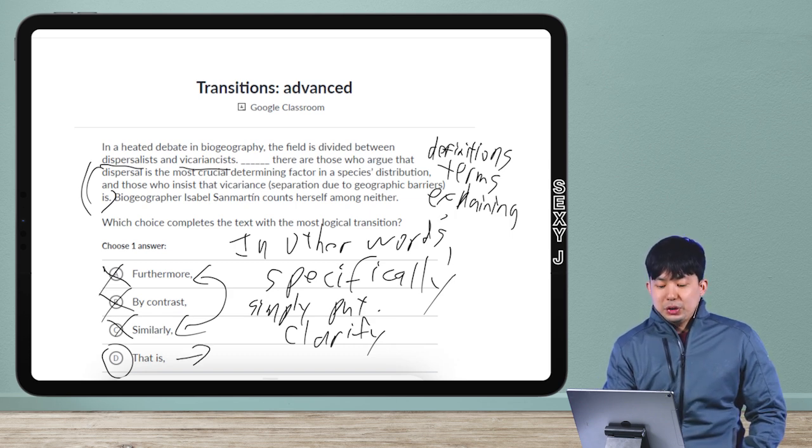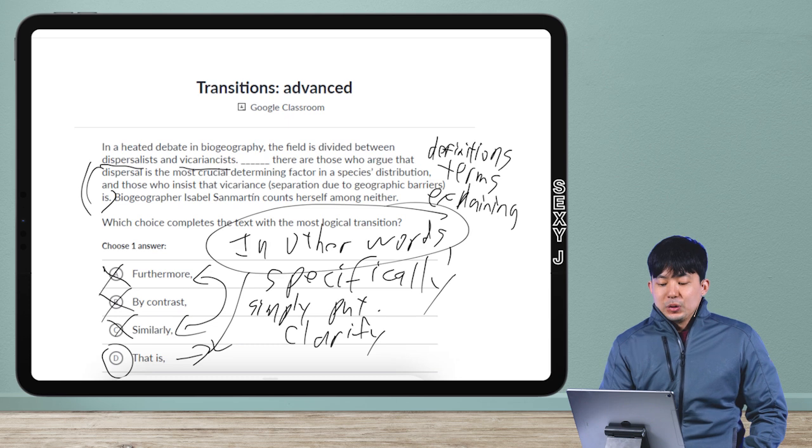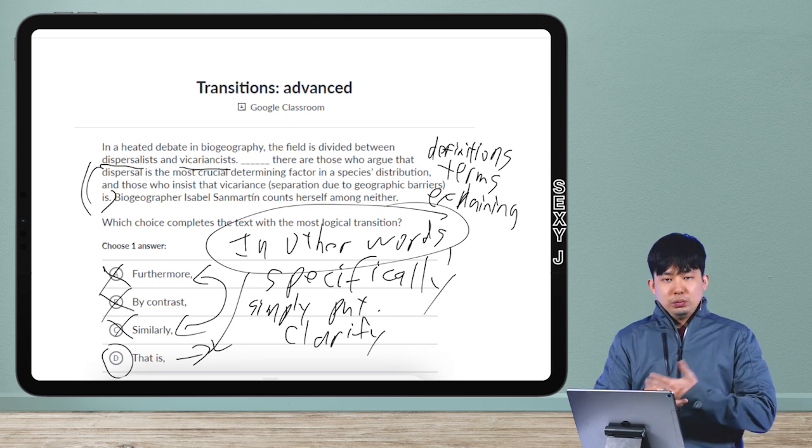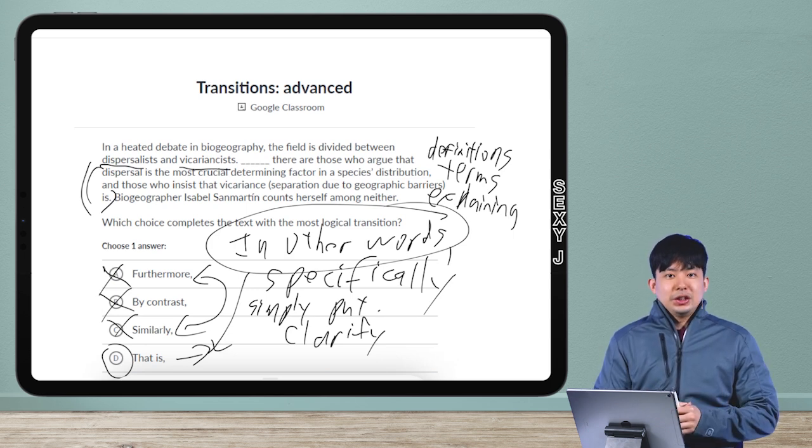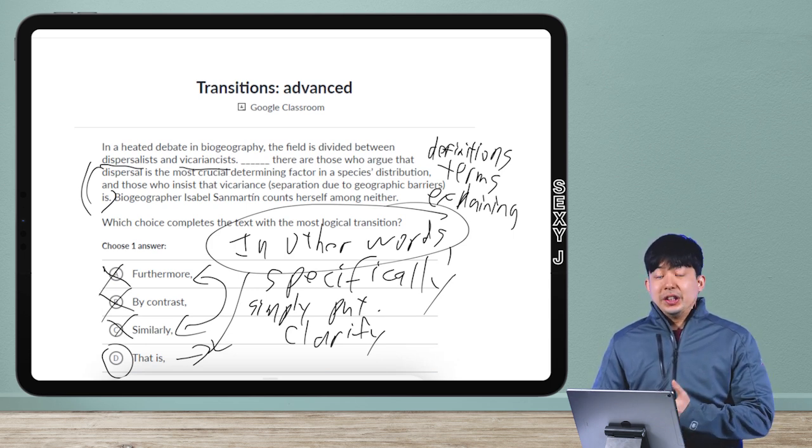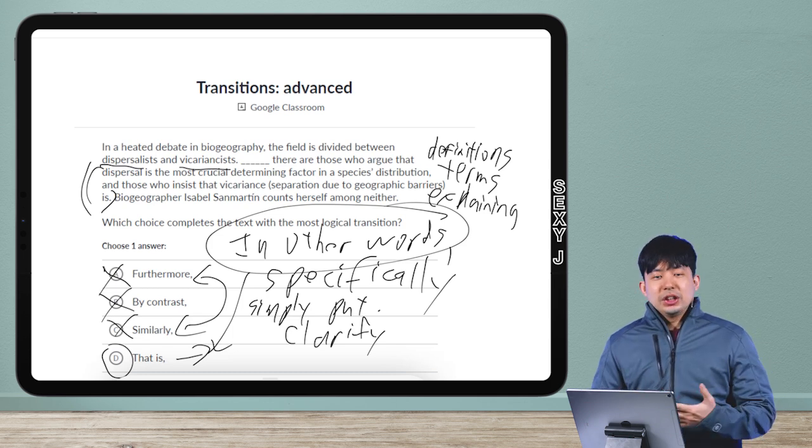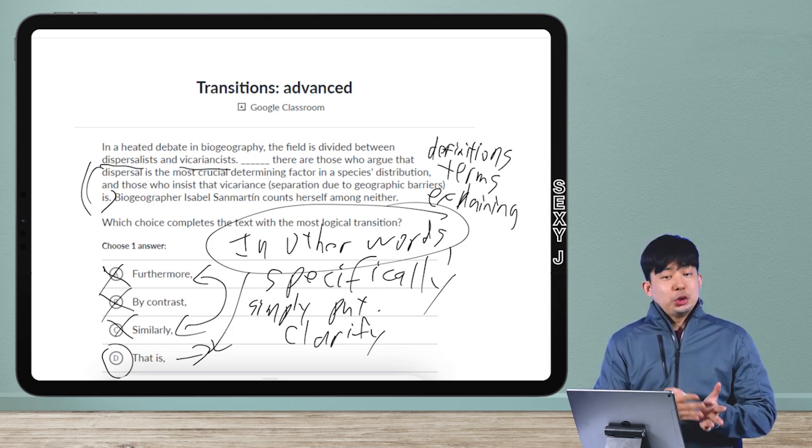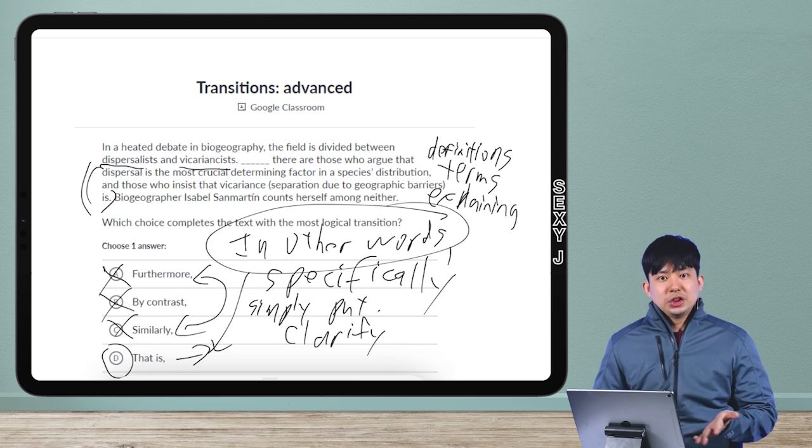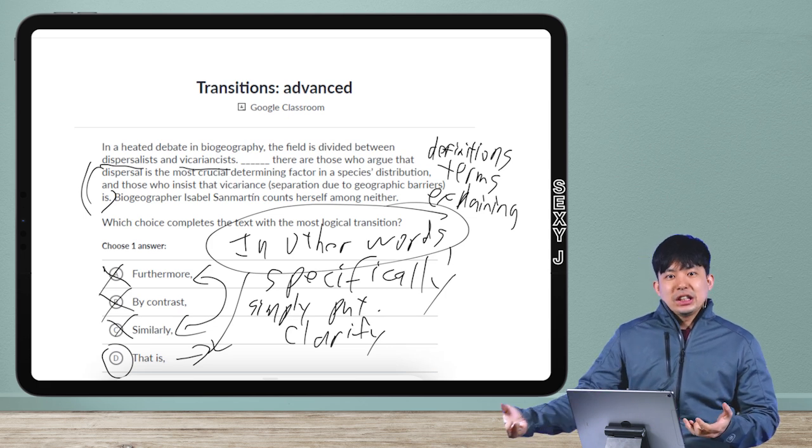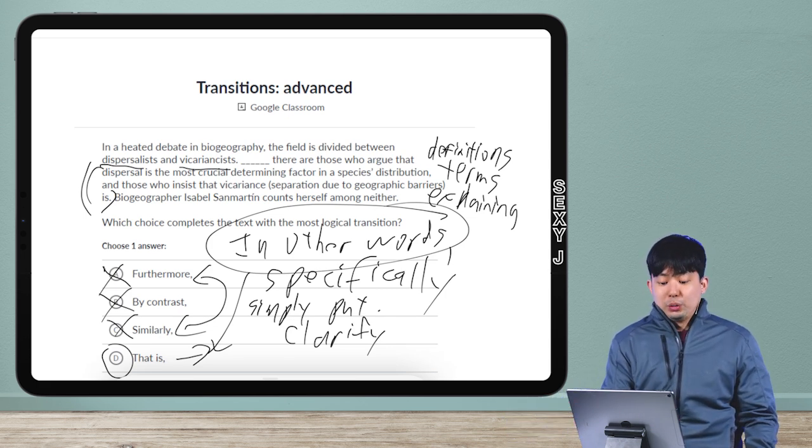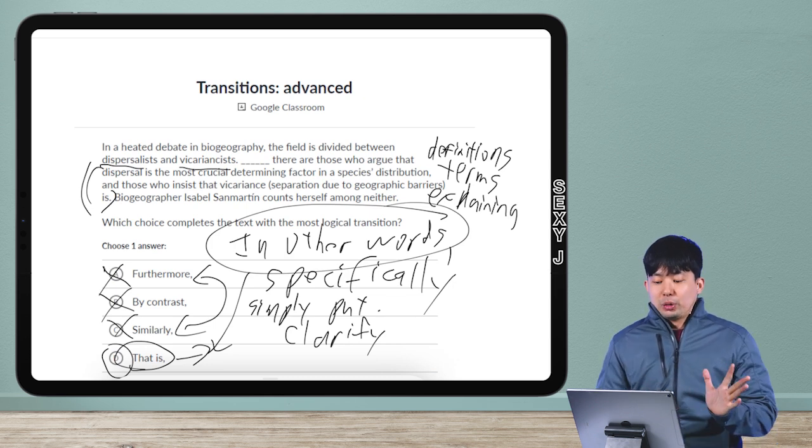That is is pretty much in other words. SAT digital, especially on the transition questions, have gotten into a habit of using these kind of weird or odd transitions that people don't use too commonly in real life anymore. The reason for that is there aren't actually that many transitions in the English language. However, for whatever reason, SAT has decided to dedicate a good portion of each module—like three, four, or five questions on transitions. That means in order for them to make it not so repetitive, they have to drag out these kind of unusual transitions, which you know, as the word that is.